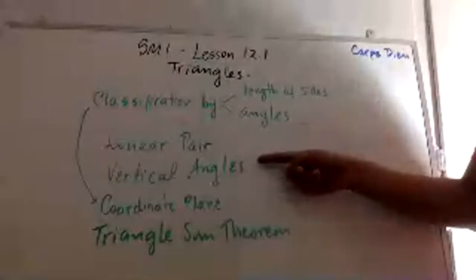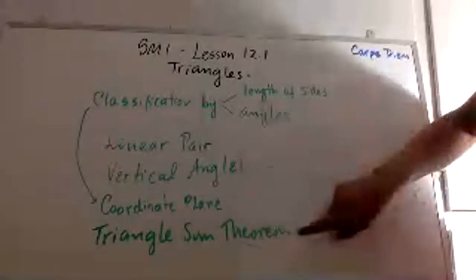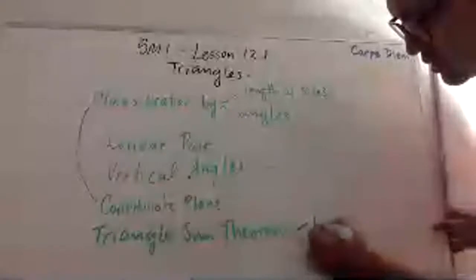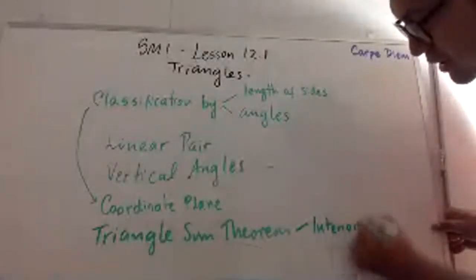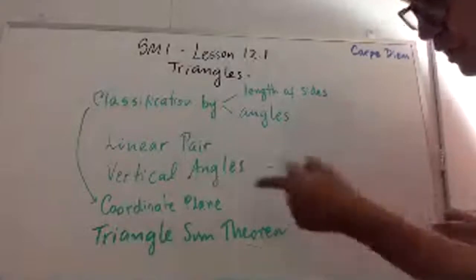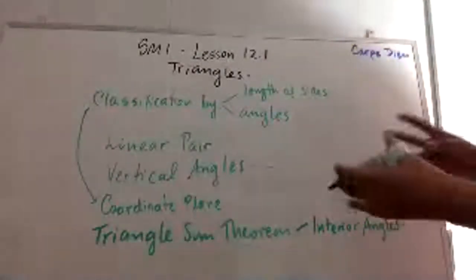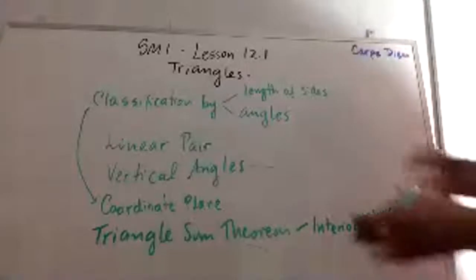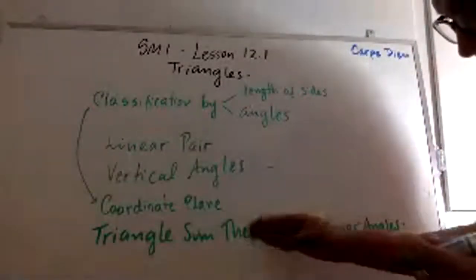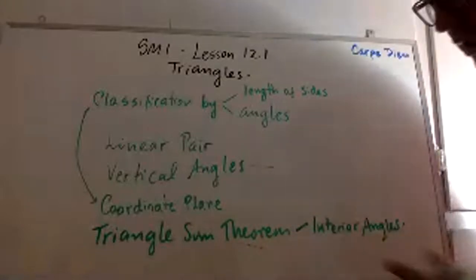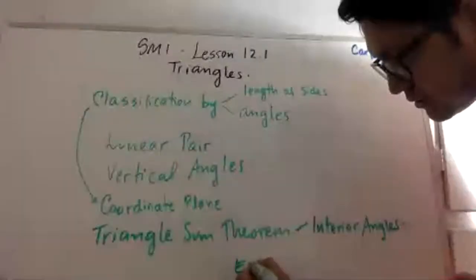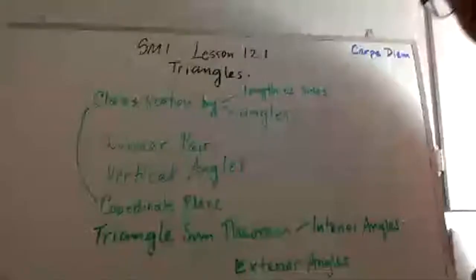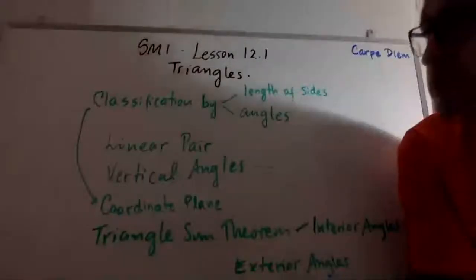We need linear pairs and vertical angles to help us with the triangle sum theorem. We're talking about the interior angles of a triangle, and there is an extension for it which covers exterior angles.